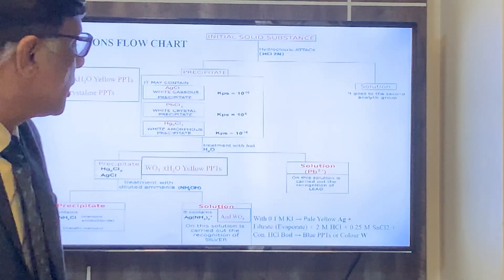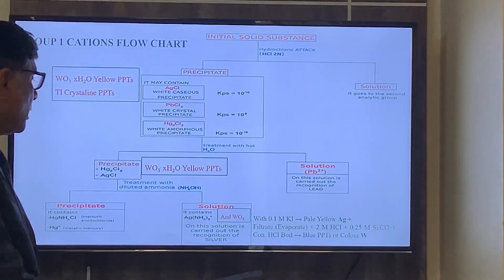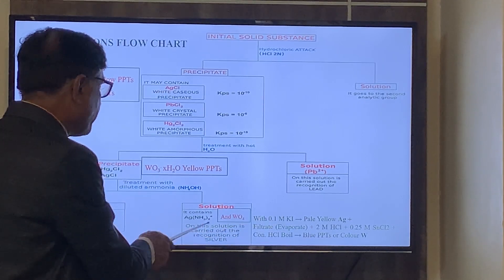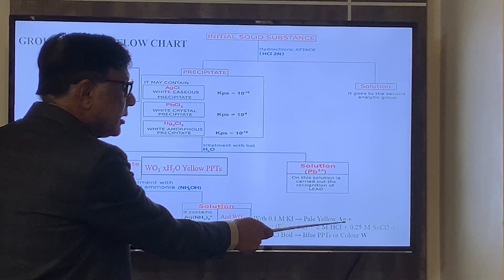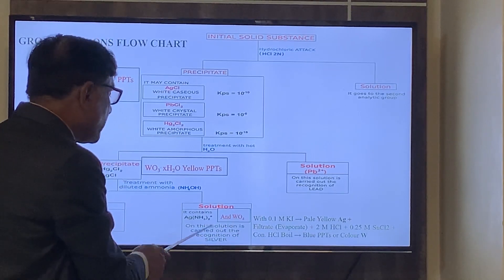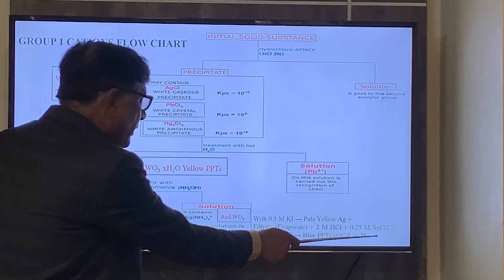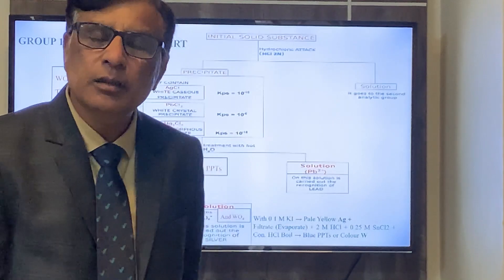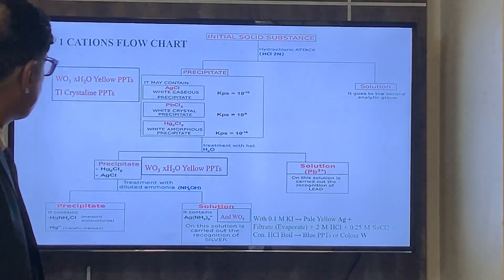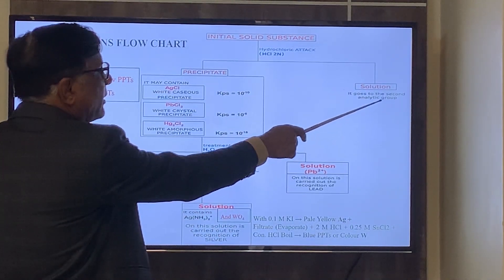If you get blue color in this test, you can say that tungsten is present. If you get pale yellow color with KI, you can say that Ag⁺ is present. After evaporation, acidify with HCl, add tin chloride (SnCl₂), and boil with HCl — if it turns blue, tungsten is present. The filtrate from hot water treatment goes to the second analytic group.